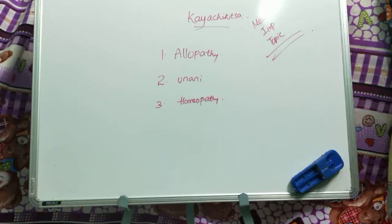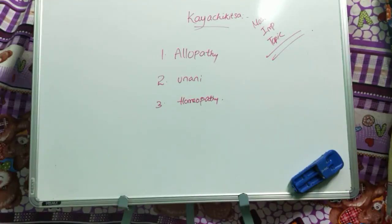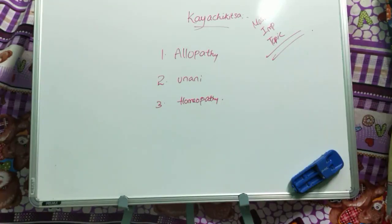Allopathy is a modern medicine. The term allopathy was coined by Dr. Samuel Hahnemann — S-A-M-U-E-L H-A-H-N-E-M-A-N-N. The term allopathy comes from a Greek word: 'allo' means opposite, 'patho' means suffering. So allopathy means the treatment which is opposite to the suffering.